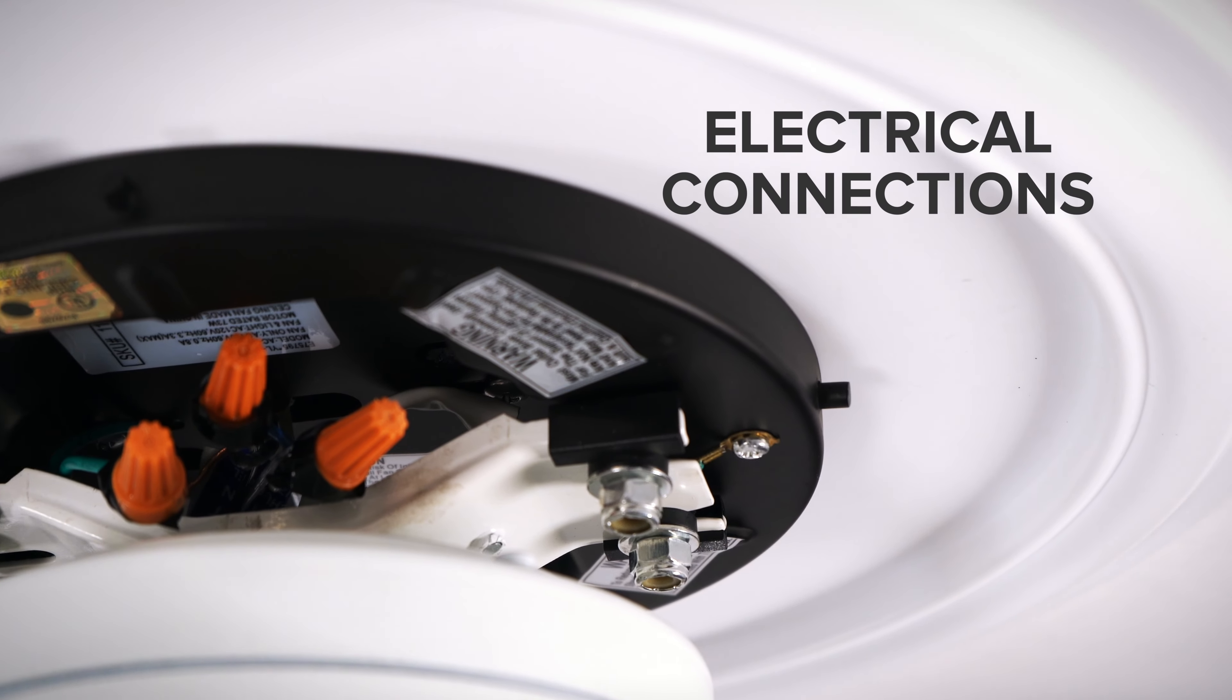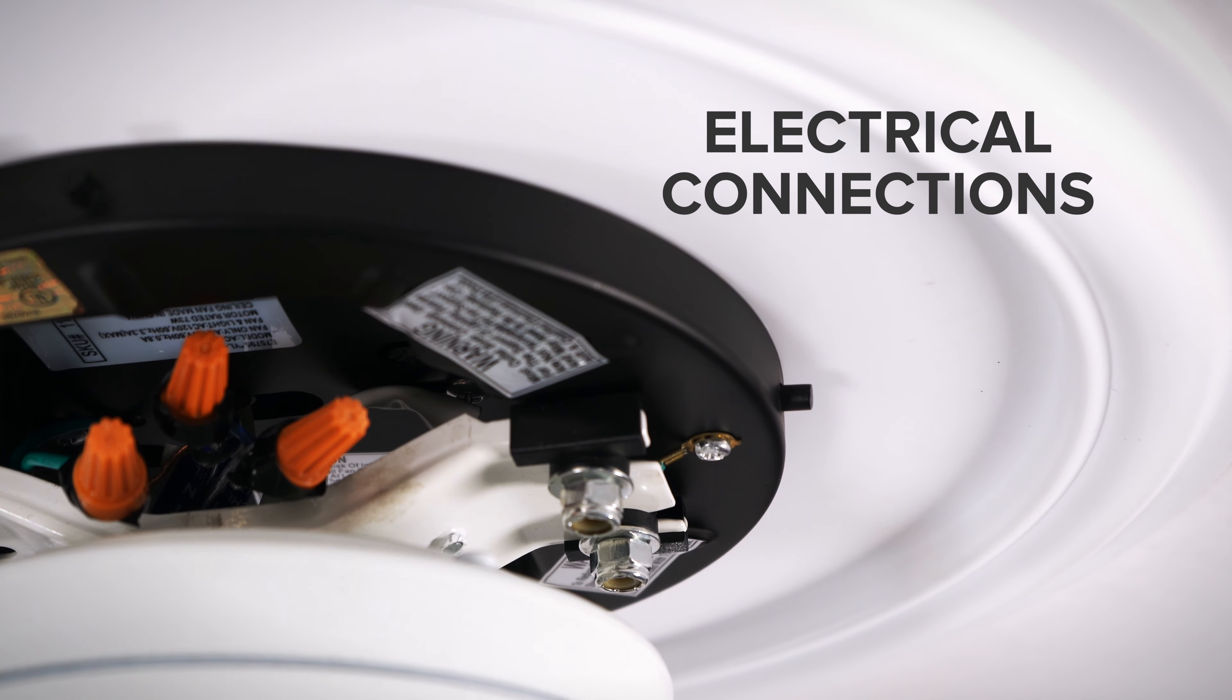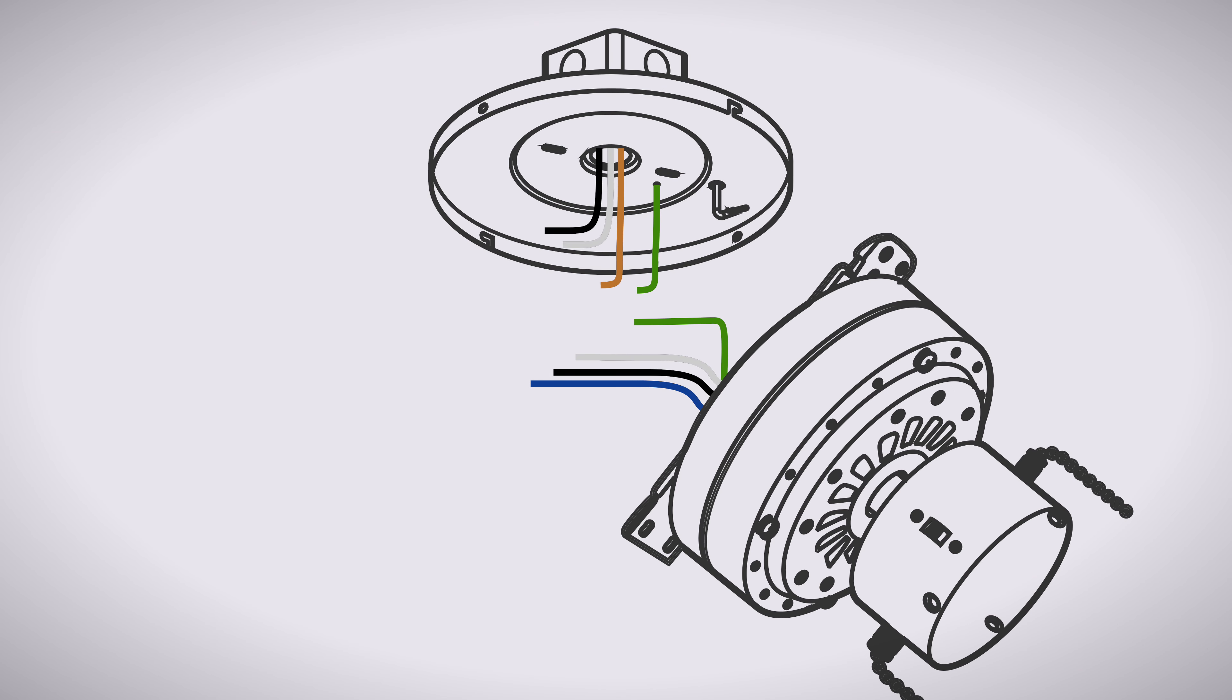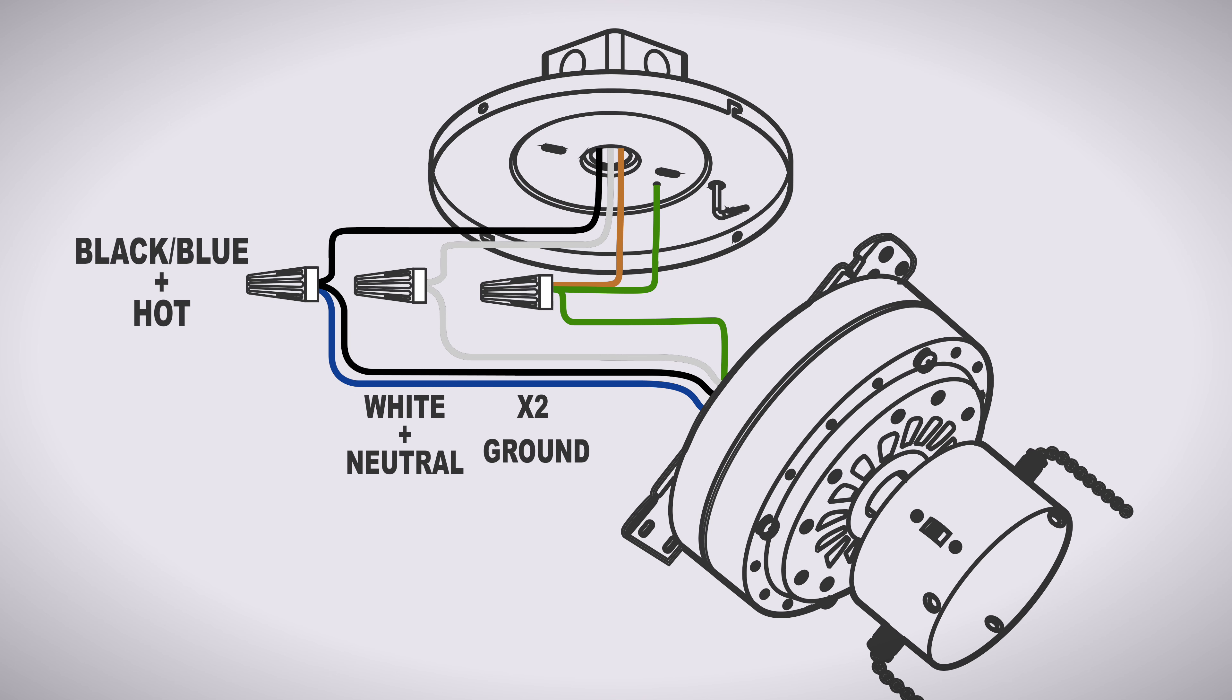Now you can make the electrical connections. Use a wire nut to combine the ground wires from the ceiling box, motor, and hanger bracket together. Combine the neutral wire from the box with the white wire from the fan. Combine the hot wire from the box with the black and blue wires from the fan.